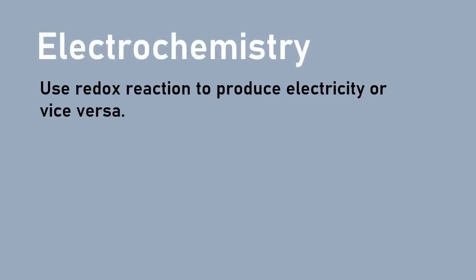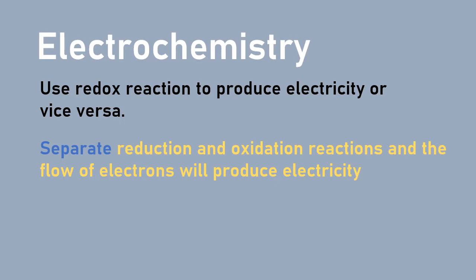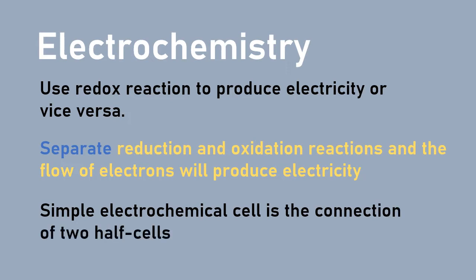Electrochemistry uses redox reactions to produce electricity, or in the opposite way, you apply electricity to make the reaction occur. Separating the reduction and oxidation reactions, the flow of electrons will produce electricity, and we can make a simple electrochemical cell by connecting two half cells together.